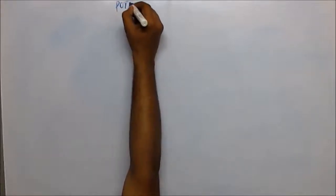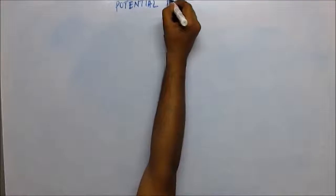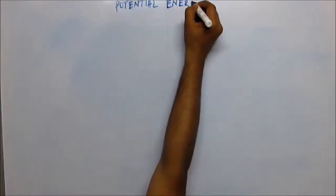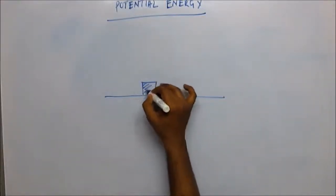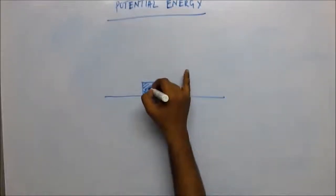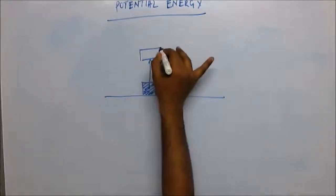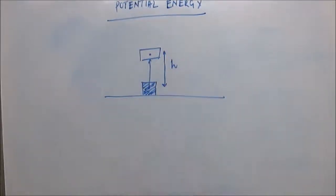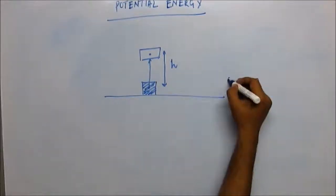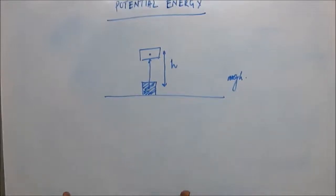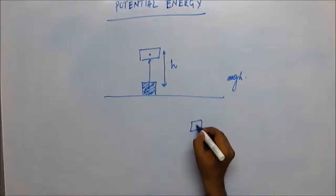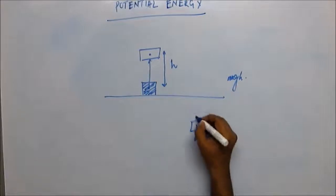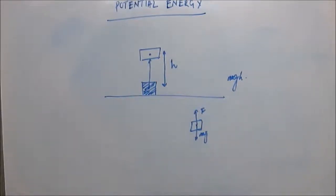We're going to talk about potential energy. I'll start with the same familiar example: when we pull this block upward by a height h, the potential energy that this body gains is mgh. We do it very slowly so that this body doesn't gain any kinetic energy. For that, at every moment there should be a balance of forces on the body so that it is not accelerated.